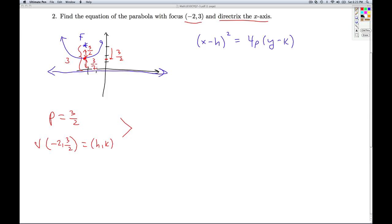So I put all this together and I get the equation for the parabola is (x - (-2))² = 4 times p, 3 halves, times (y - 3 halves). I simplify this. I get (x + 2)² = 4 times 3 halves, that's going to give me 6 times (y - 3 halves). That'll do it for number 2.